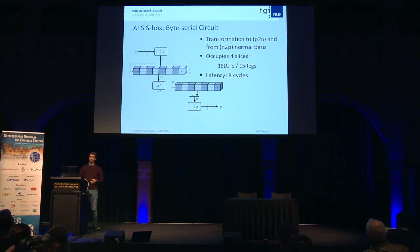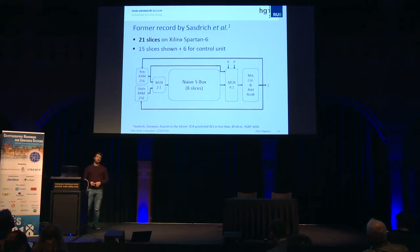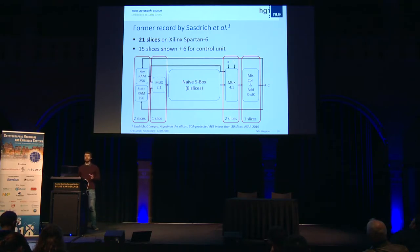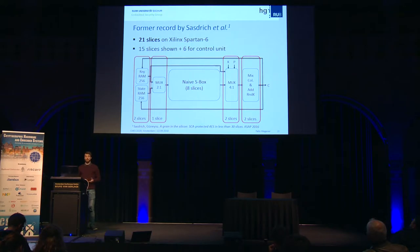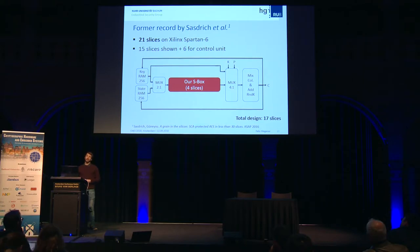Now we want to show the full AES using this S-box is worthwhile. The former record by Sastrych et al. implemented AES on Xilinx Spartan 6 in 21 slices, using distributed RAM for the key and state, and an unconventional way to compute MixColumns. Their only limitation was using the naive S-box. We simply replace it with our S-box, and the reduction translates directly to the whole design — giving a total design of only 17 slices.